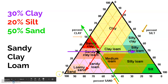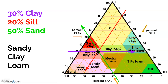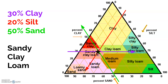To use the triangle, I start with the clay side. If it's 30 percent clay, I go up here and draw a line. Then go over to silt — silt is 20, so draw a line going down to the left. Then sand is 50, so draw a line down here. It's where those lines intersect that gives you the texture of the soil. For example, this composition would yield sandy clay loam.